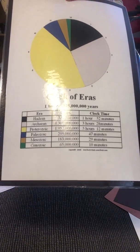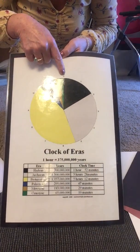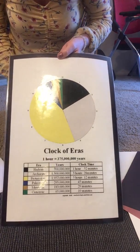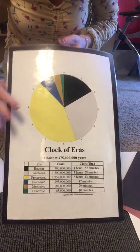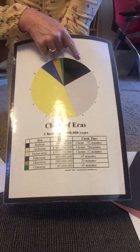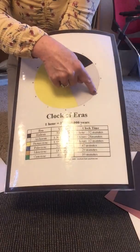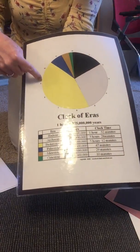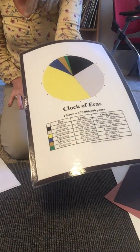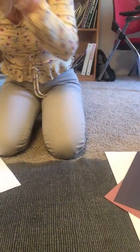This Clock of Eras illustrates time that has already passed — it represents the time the Earth has been in existence, about 4.5 billion years. One hour on this clock represents 375 million years. We're going to learn the story of what was happening during all these different periods of time.